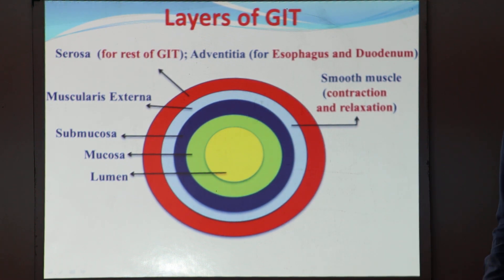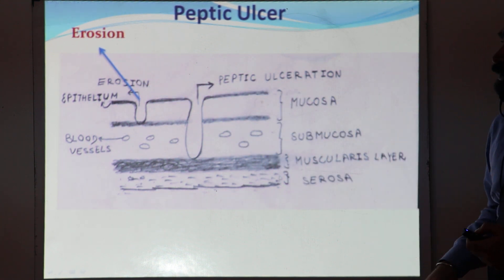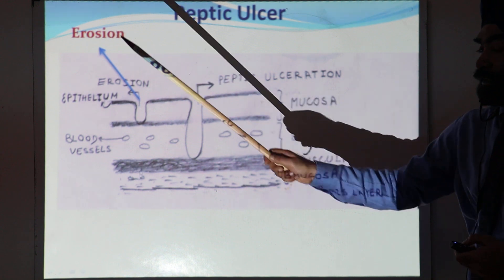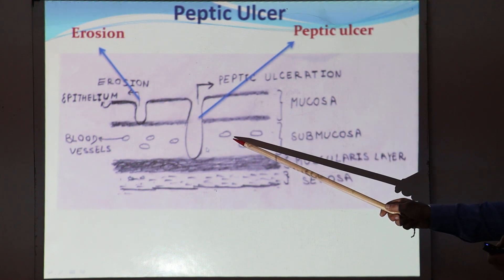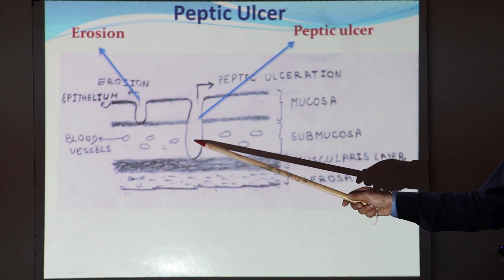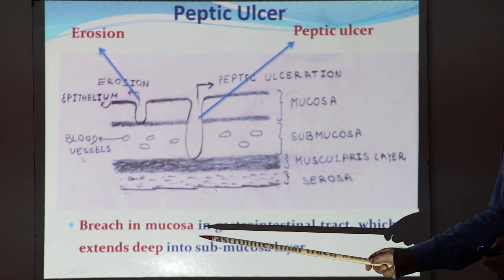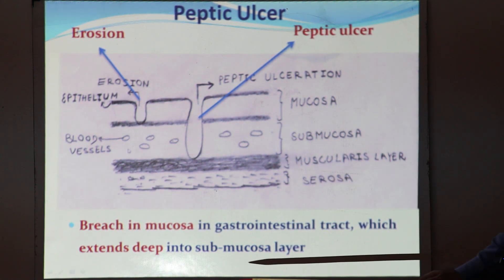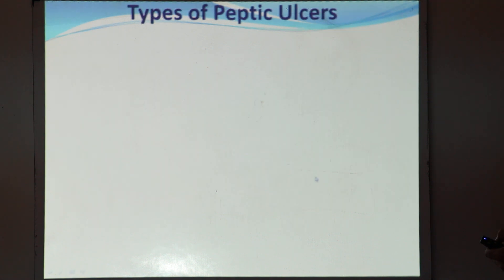Now, with the term peptic ulcer, I want to differentiate two words. One is erosion — if the uppermost mucosal layer is ruptured, we use the word erosion. But if the damage in the GIT extends through the mucosa into the submucosa, and sometimes into the muscularis layer, that is called peptic ulcer. So peptic ulcer is a breach in the mucosa of the GIT which extends deep into the submucosa or sometimes into the muscularis layer.